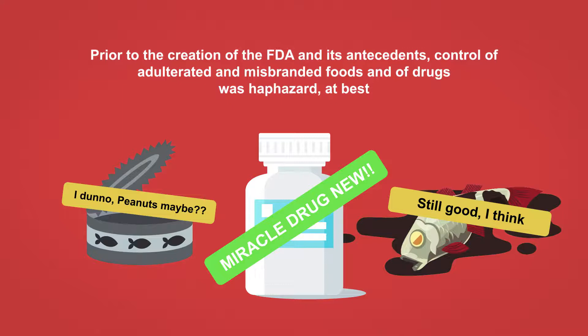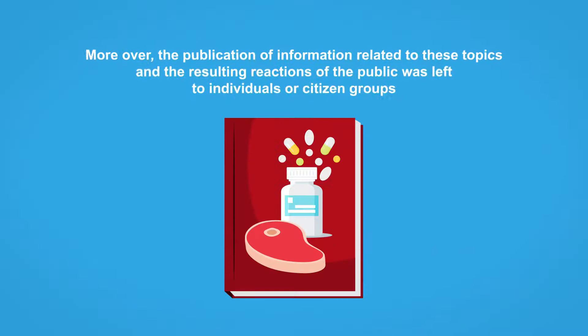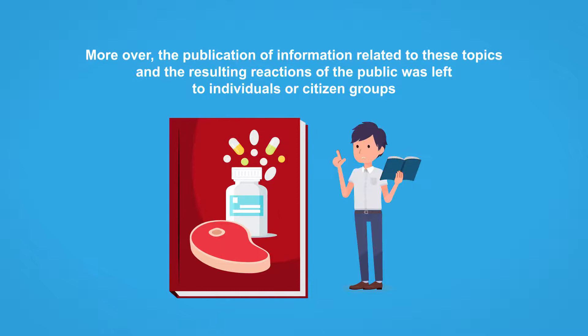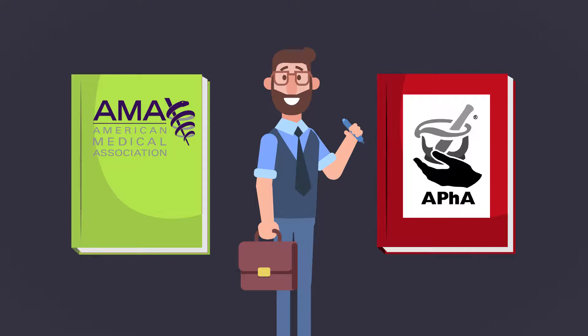Prior to the creation of the FDA and its antecedents, control of adulterated and misbranded foods and of drugs was haphazard at best. State and local governments loosely and often ineffectively monitored food and drug production and claims of ineffectiveness for medical products. Moreover, the publication of information related to these topics and the resulting reactions of the public was left to individuals and citizen groups. Thus, the American Medical Association, the American Pharmaceutical Association, and journalists and authors were at the forefront of the investigation of these critical problems.